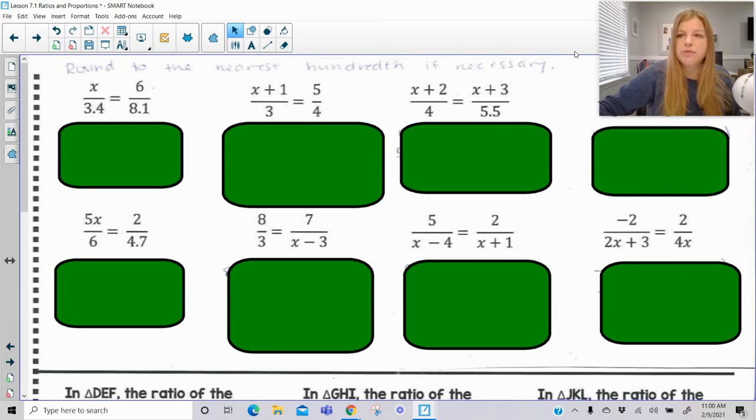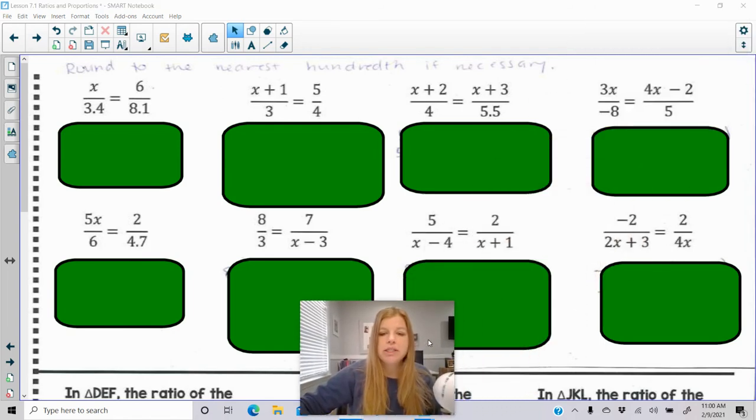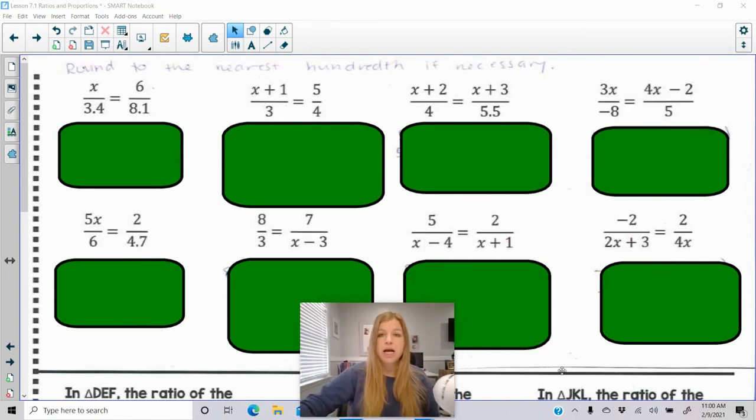Now I have 8 proportions for us. If you feel like you can solve these proportions on your own, please pause the screen. I'm going to move my face. Please pause the screen and give these a shot, and then press play and check to see if you got them right. If you feel like you need to follow along with me, then of course do. I'm going to be using cross products for each one of these, and the directions say round to the nearest hundredth if necessary. So I'm going to round two places after the decimal if we end up getting a decimal longer than that. If you want to pause, try these out, and then press play. Otherwise, follow along with me.